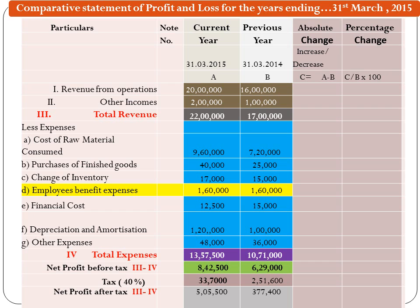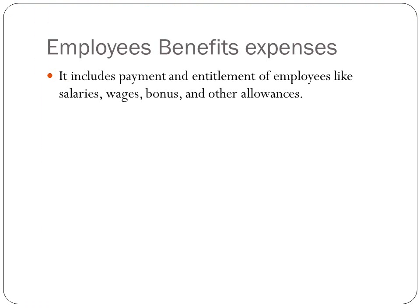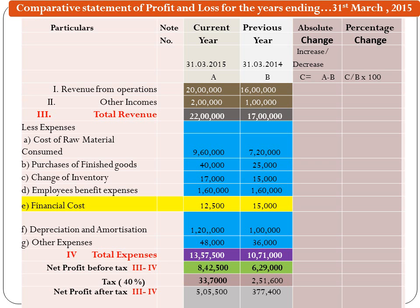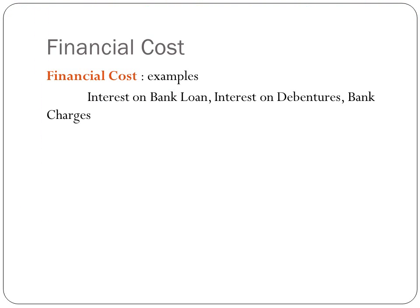The fourth head of Expenses is Employees Benefit Expenses, which include payments and entitlements of employees like Salaries, Wages, Bonus, and Other Allowances. The next in the list of Expenses is Financial Costs, which include Interest on Bank Loan, Interest on Debentures, and Bank Charges. These are the expenses relating to Finance and its Management.